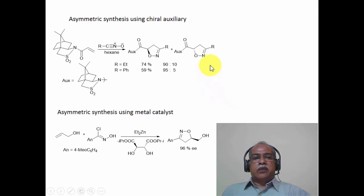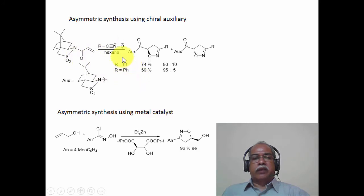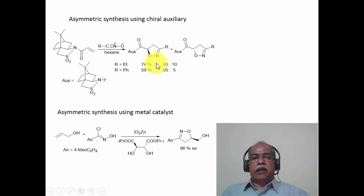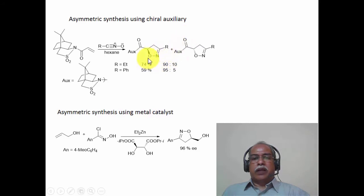Another example of asymmetric synthesis using the same sultam chiral auxiliary is shown. The cycloaddition reaction of the nitrile oxide with two different dipolarophile derivatives — where R equals ethyl and R equals phenyl — gives high diastereoselectivity: 90:1 and 95:5, respectively. Once the nitrogen–oxygen bond is cleaved and the resulting imine is hydrolyzed, the corresponding beta-hydroxy derivative is obtained in an enantioselective manner. Overall, this constitutes an asymmetric synthesis of a beta-hydroxy ketone or aldol-type derivative.